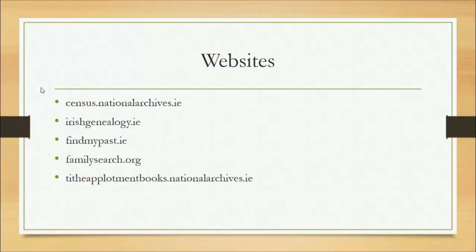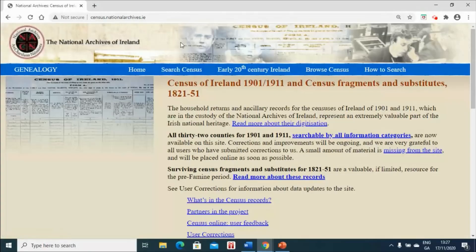This talk is going to cover the following websites: census.nationalarchives.ie, irishgenealogy.ie, findmypast.ie, familysearch.org, and then we're going to finish with the Tithe Applotment Books on the National Archives website. I'm going to begin by looking at the census on census.nationalarchives.ie.